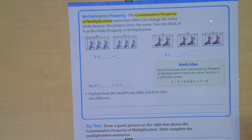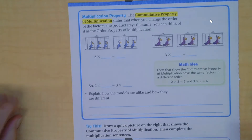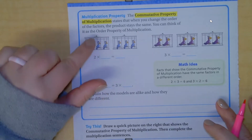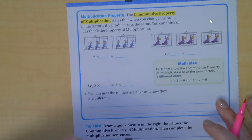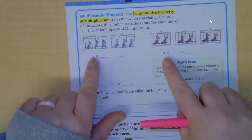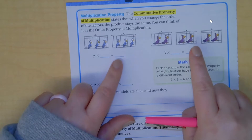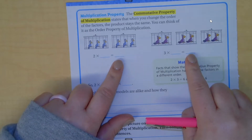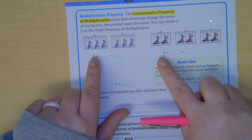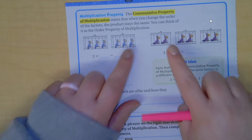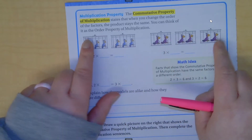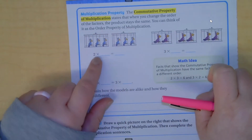Something else we have talked about is when we are representing multiplication using pictures, the order does matter because it needs to match the picture. The commutative property of multiplication states that the order of the factors doesn't matter in regards to the product — the answer. So the commutative property says the order of the factors doesn't matter; the product will remain the same. The picture will change though, so the picture needs to line up with the problem.